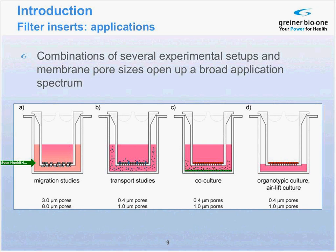If we go back to the migration assay, it works as follows. You insert the insert into the plate, add medium to the upper and lower compartments, and may add a chemoattractive substance to the lower compartment. You then seed cells of interest on top of the membrane. After incubation, your cells can detect the chemoattractant in the lower compartment and start to migrate downwards. They make themselves slim, change their cytoskeleton, and end up after migration through the pores on the lower side of the membrane in an adherent status. You can then simply detach these cells and quantify the amount of migratory cells.